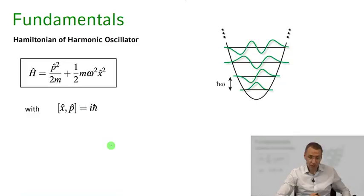Welcome back everybody to our course introduction to quantum optics. Today we want to review the physics of the quantum harmonic oscillator, a very famous topic in quantum mechanics, and we're going to use that a lot in the context of quantum optics. So we just want to review some of the essential physics of this quantum harmonic oscillator. Let's get started.